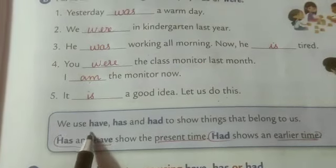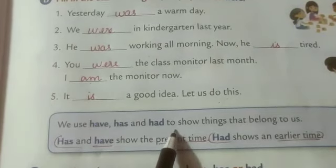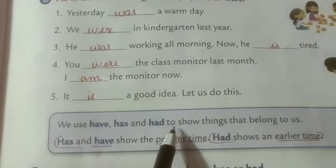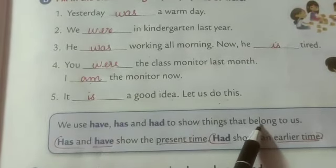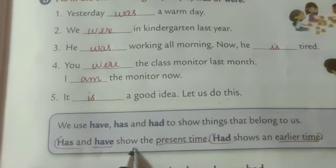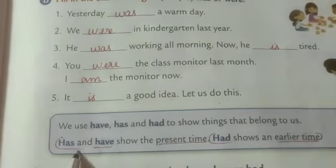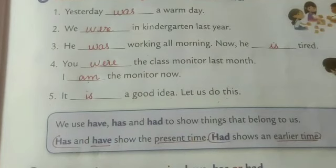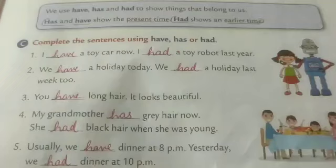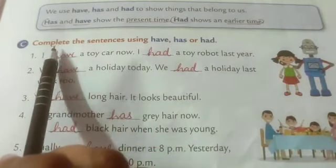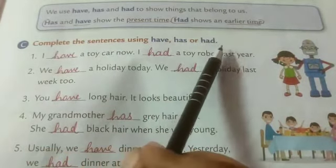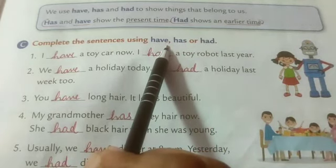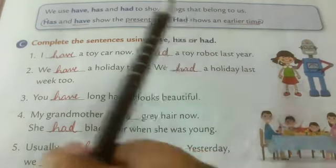We use have, has, and had to show things that belong to us. Has and have show the present time. Had shows an earlier — past — time.